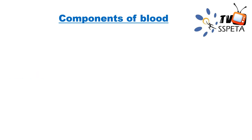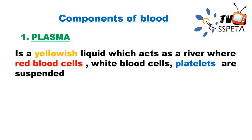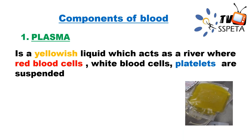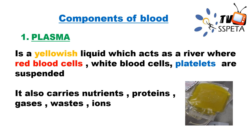The first component of blood is plasma. It is a yellowish liquid which acts as a river where red blood cells, white blood cells, and platelets are suspended. Here we can see a diagram of plasma where the red blood cells have been removed — so it is a yellowish liquid. Gases like oxygen and carbon dioxide are carried dissolved in this liquid.